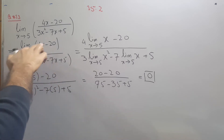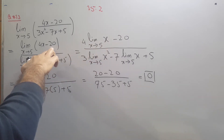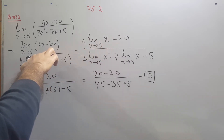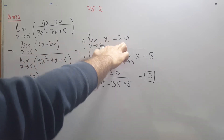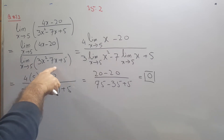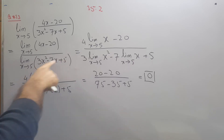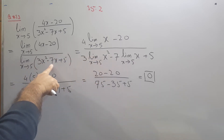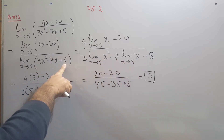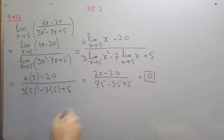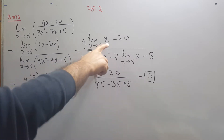4 is a constant multiplying x, so we take out the 4 and apply the limit on x. Minus 20 is a constant, so by the property of limits we just write it down as 20. Similarly for the denominator: from 3x squared we take out 3 and apply the limit on x squared; from minus 7x we take out 7 and apply the limit on x; and 5 is a constant so we write it as is, since the limit of a constant is the same constant.